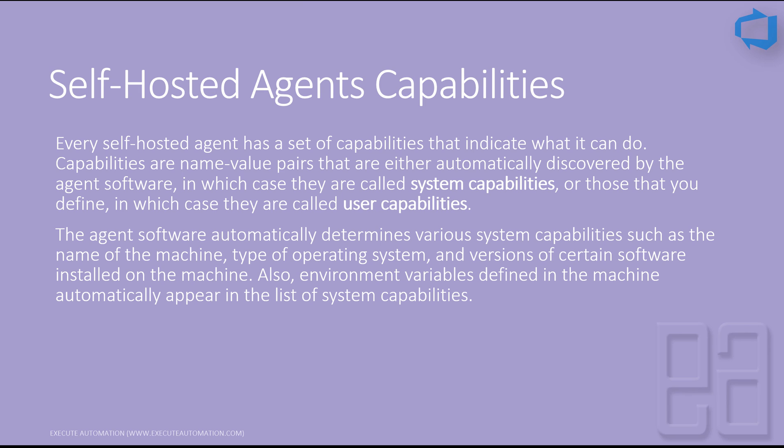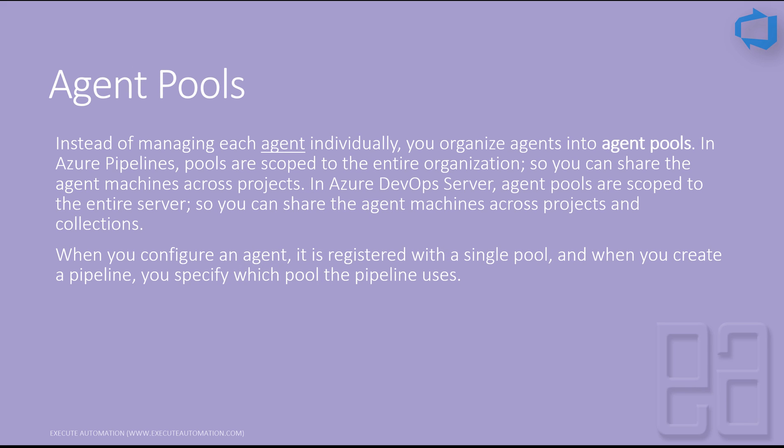If you need to manage a set of agents — say one running on Windows and another on Ubuntu or macOS — you need something called an agent pool. Instead of managing each agent individually, you organize agents into agent pools. In Azure Pipelines, pools are scoped to the entire organization, so you can share agent machines across projects.